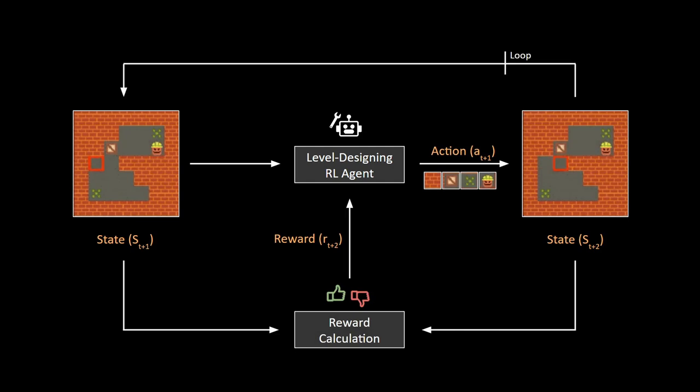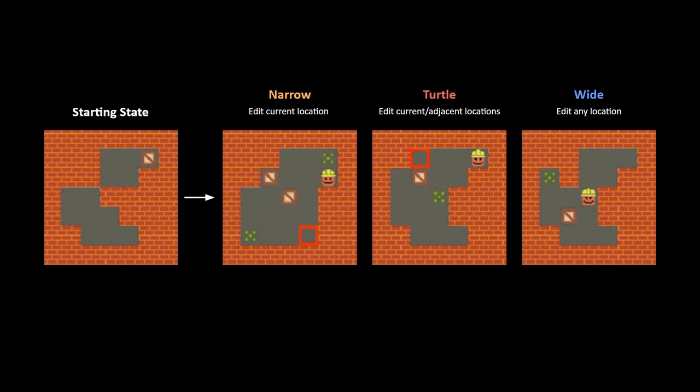The biggest advantage of this is that after training is complete, we can generate practically infinite unique game levels all at the click of a button without having to design anything manually. The paper also contains comparisons between different approaches that the RL agent can use to traverse and edit the environment, which you can see here. If you'd like to get more details on the performance comparison between these methods, I have linked the PDF for the paper in the video description below.